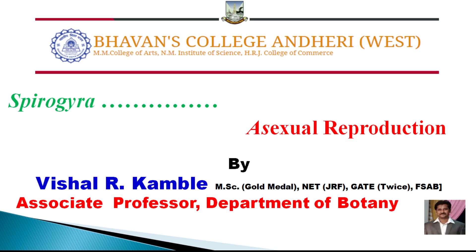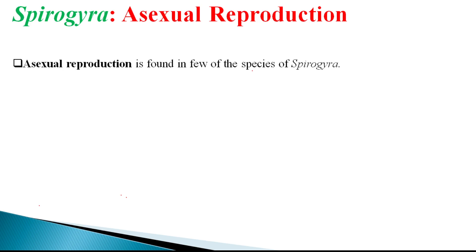In this video, I will explain the method of asexual reproduction in Spirogyra. Generally, it is believed that asexual reproduction by spore is absent in Spirogyra. However, asexual reproduction has been reported in very few species. Importantly, zoospore formation is totally absent in Spirogyra.